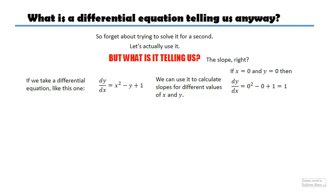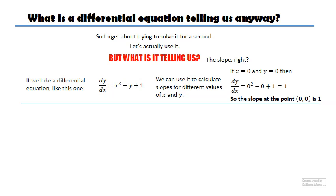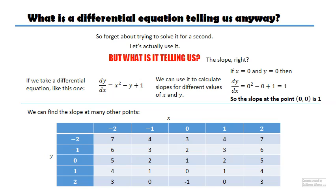If x is equal to zero and y is equal to zero then I get one, so for (0,0) the slope would be one. Here's the table I could build for all different values of x and y — I'm just substituting in here and getting all these different slopes. When x is minus 1 and y is 1 the slope is 1. When x is minus 1 but y is 0 the slope is 2.